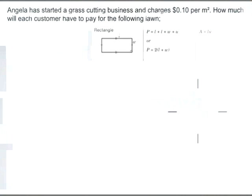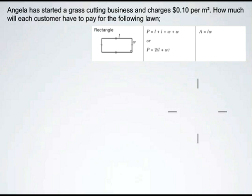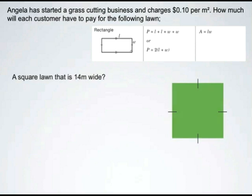Now let's put our knowledge of area of a rectangle to use in an example of a grass cutting business. Angela has started a grass cutting business and charges 10 cents per square meter. How much will each customer have to pay for the following lawn? Here we have a lawn that is 14 meters wide, and it looks like all sides are equal, so that would mean the length and width are both 14 meters.